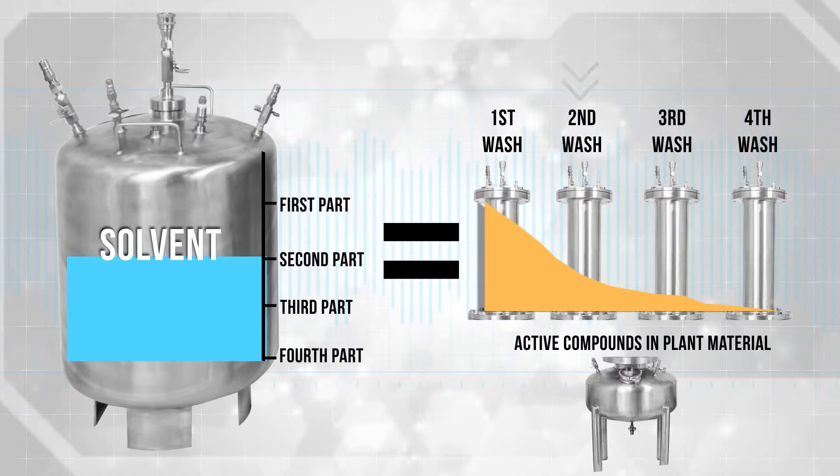The second volume mixes slightly with the first, and the third volume mixes slightly with the second, and so on. It is known that by the third and fourth volumes, very little desired compounds will remain in the plant matter. It is the third volume of the solvent that washes the plant clean of any dissolved compounds. The fourth volume stays in the plant matter and must be recovered from that position. Although these volumes are mentioned as separate actions, they flow through in one continuous cycle.